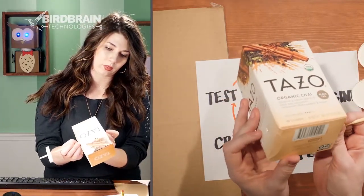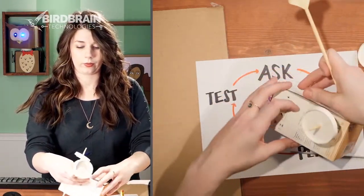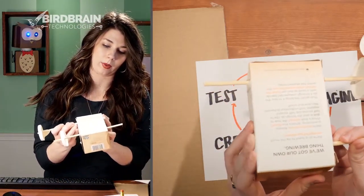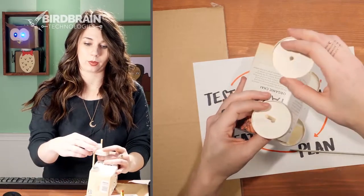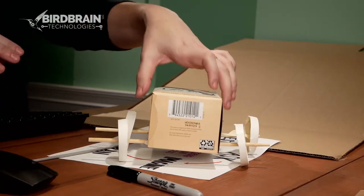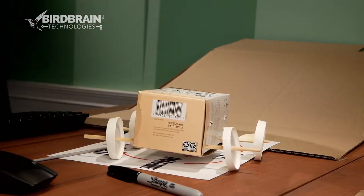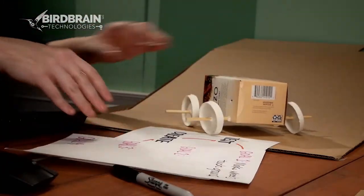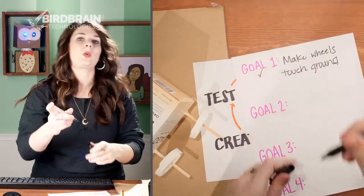We've got the axle through one side and out the other. Now I have a ramp built — when I go back to the other shot, you can see this ramp. I want to send my rover down it and have it roll. Look at there — the wheels touch! The chassis no longer sits on the ground. Goal number one — we did it! We made the wheels touch the ground.